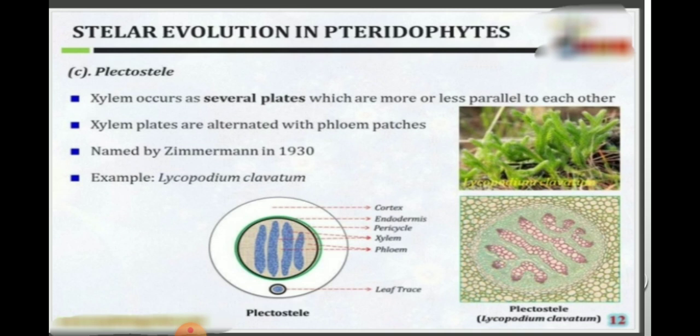Next is plectostele, which is the most advanced type of protostele. Here the central core of xylem is divided into a number of separate plates arranged parallel to each other. The phloem alternates with the xylem. Example is Lycopodium species.